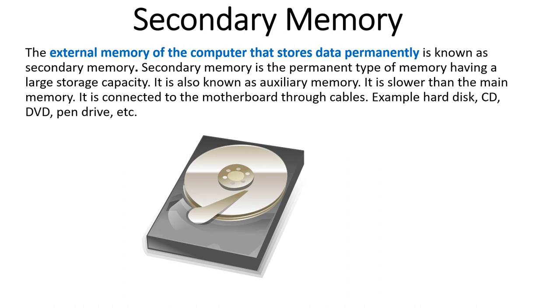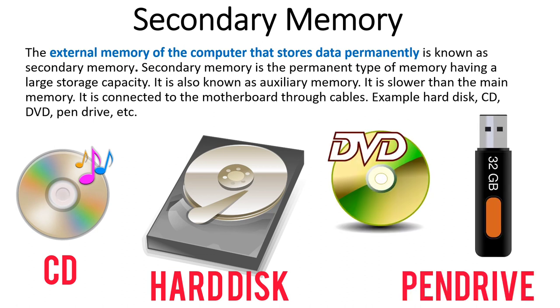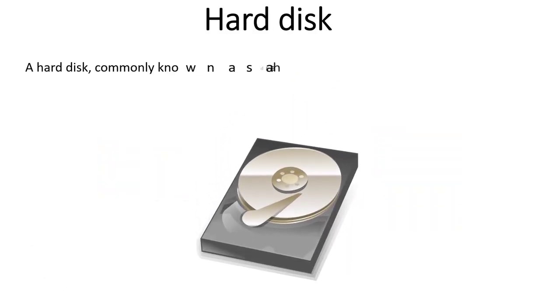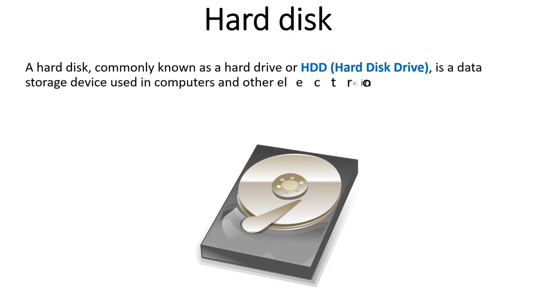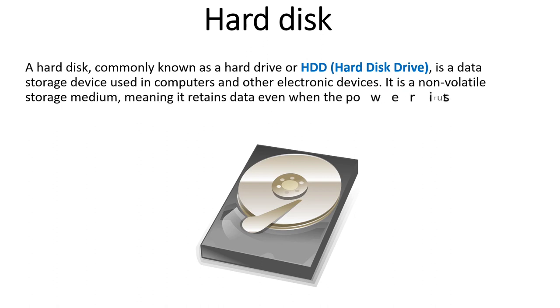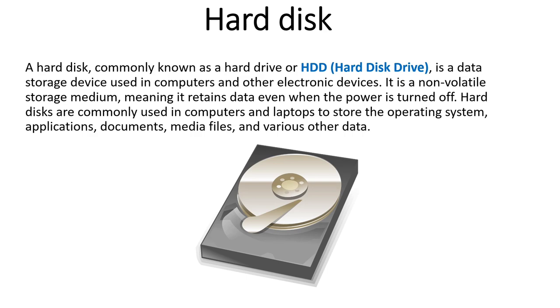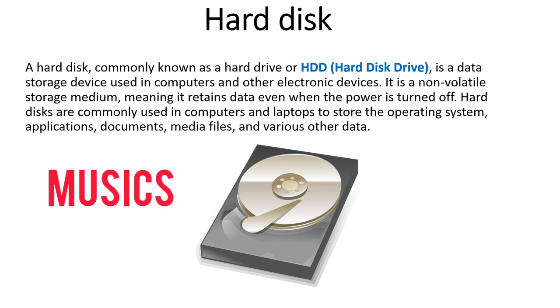Some examples of secondary memory are hard disk, CD, DVD, and pen drive. Hard disk is the secondary memory of our computer system, commonly known as hard drive or HDD. It is the non-volatile memory that stores data permanently and does not lose its content when the computer is turned off. Hard disk is the common secondary memory used in laptops and desktops for storing data, files, programs, software, and multimedia content like pictures, videos, and music permanently for a long period of time.